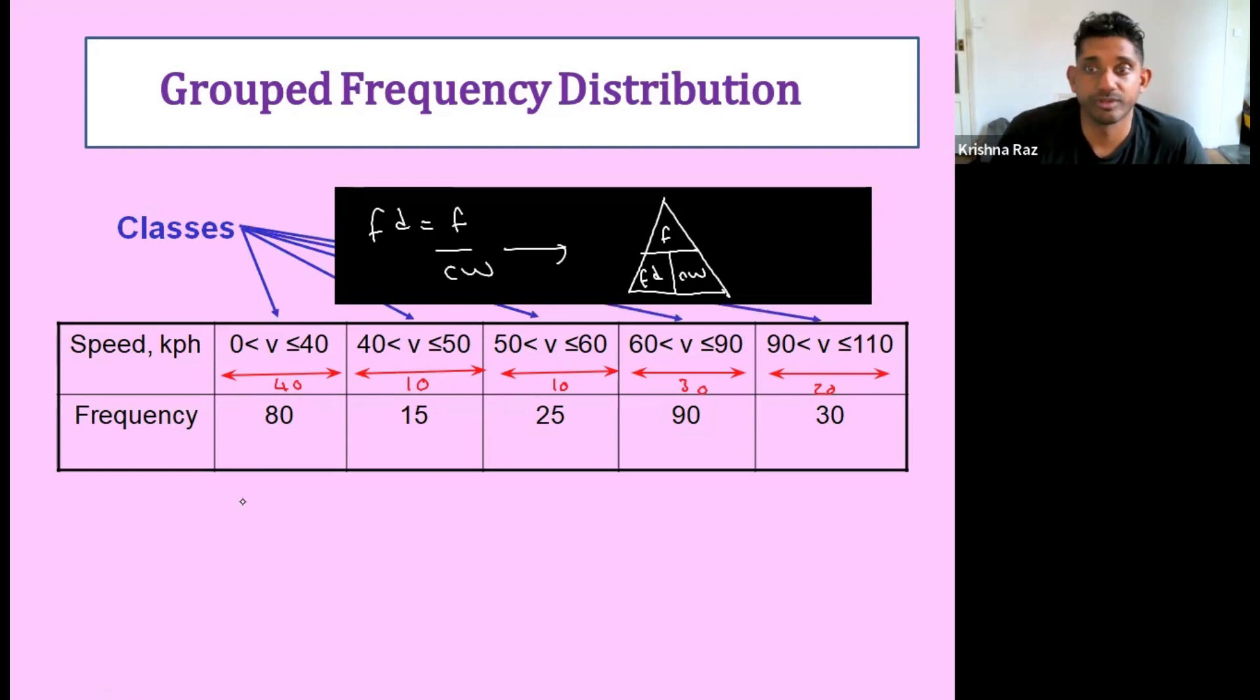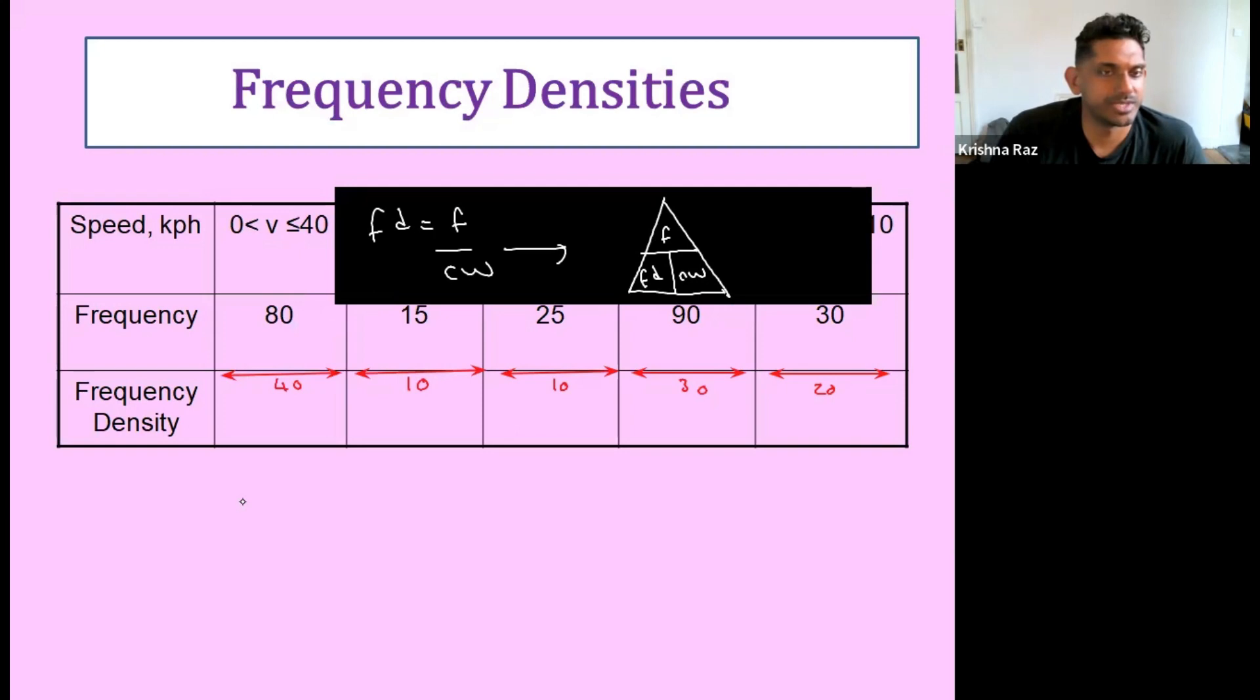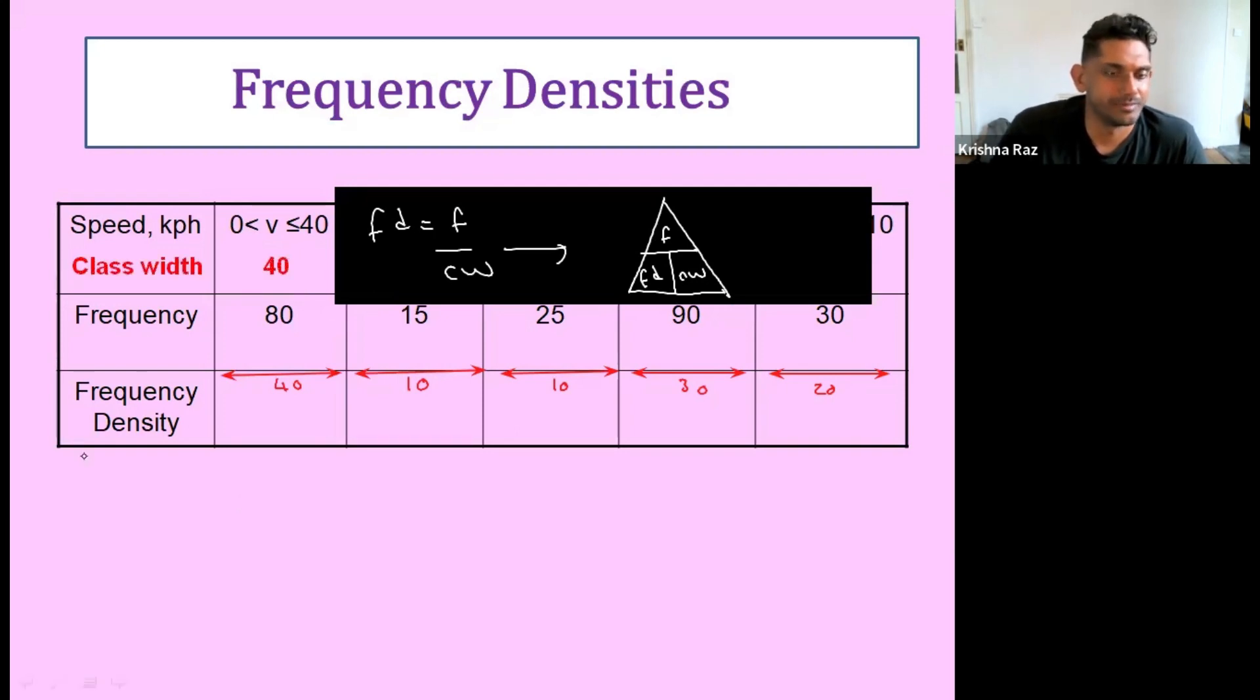And then we can use that to draw the frequency density. So we can add a frequency density column and just do those basic calculations. We have frequency density is frequency over class width. So the first one will be 80 divided by 40, then 15 divided by 10, 25 divided by 10, 90 divided by 30, 30 divided by 20. So we've figured out the frequency densities.